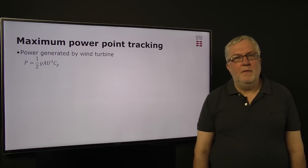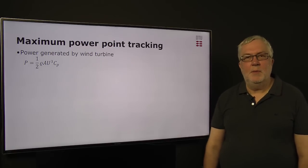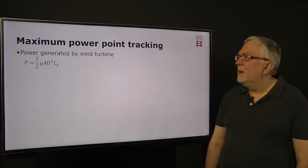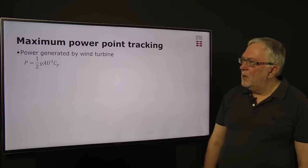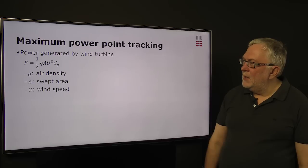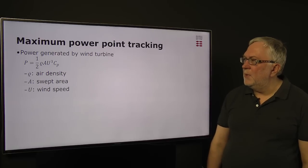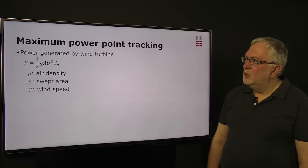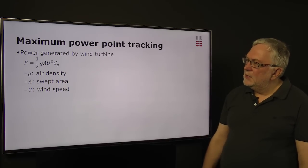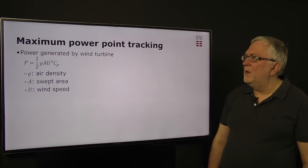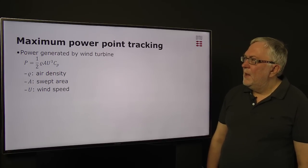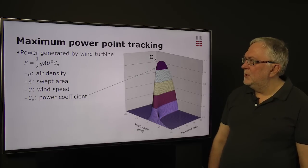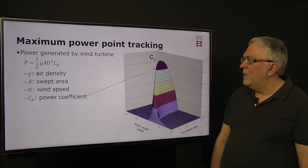Now to the point of tracking the maximum possible power generation. To understand this we can use the power equation that we have here, where the power from a wind turbine is given by the air density multiplied by the swept area of the wind turbine and the cube of the wind speed. This is the kinetic energy we have in the wind. Then we multiply this with a power coefficient cp, which is an aerodynamic efficiency.